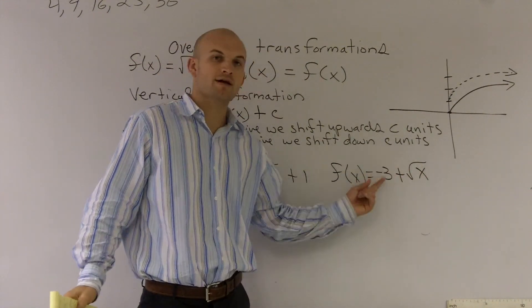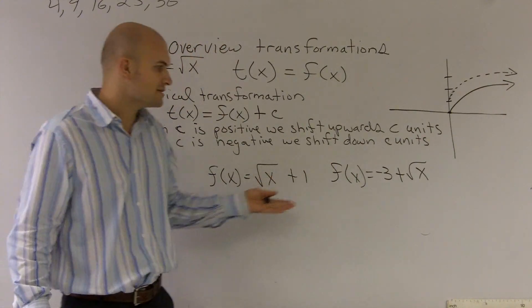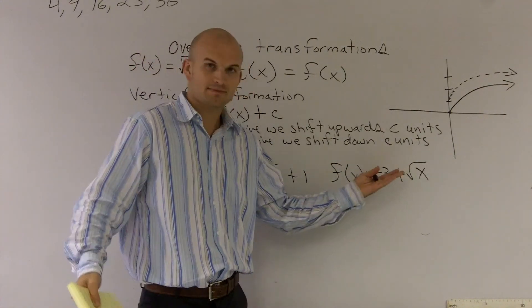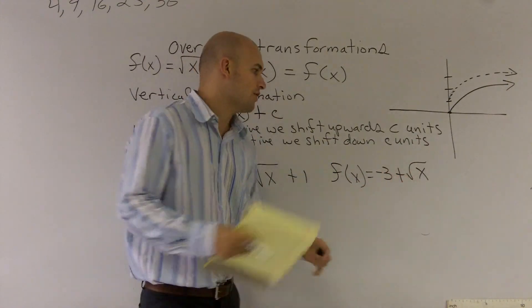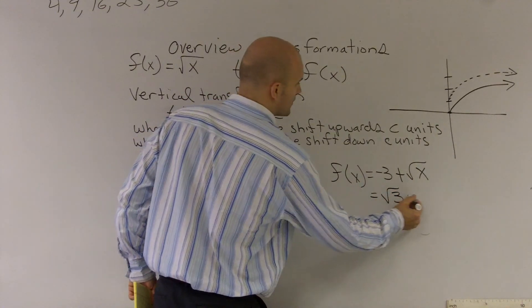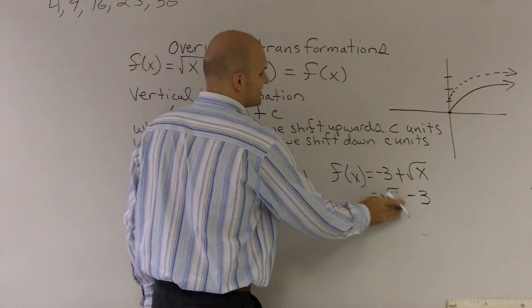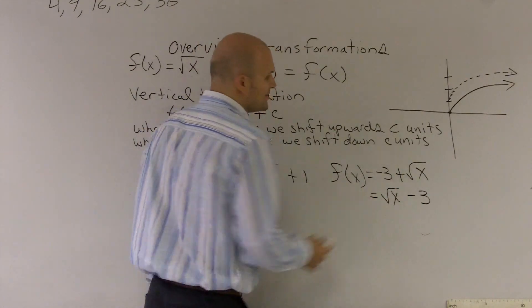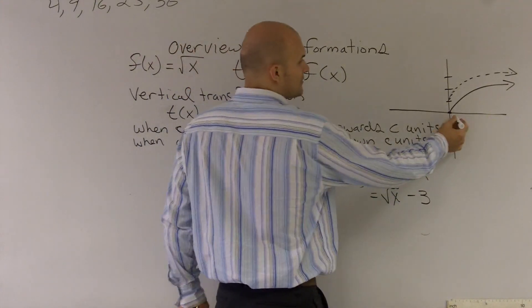But sometimes you're doing some algebra and you're going to get this form, so you're going to want to always remember you can rewrite it back to the form that we're most comfortable with. Here you can see my c is now negative, so now I'm going to shift it down three units: one, two, three. And now it's still going to be the same graph.